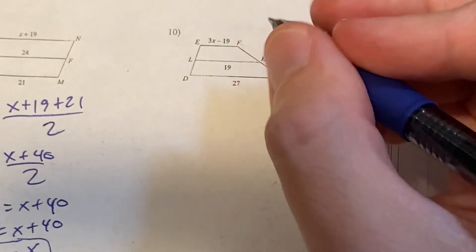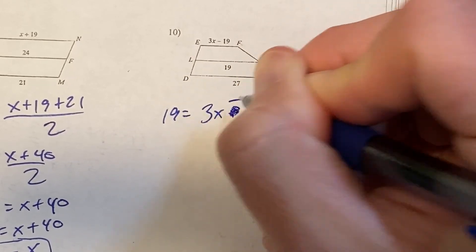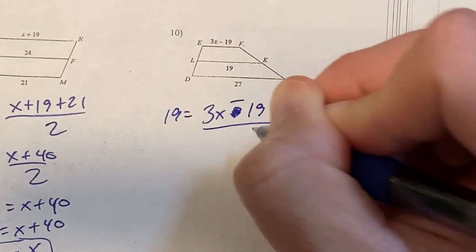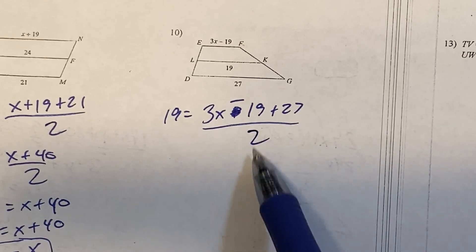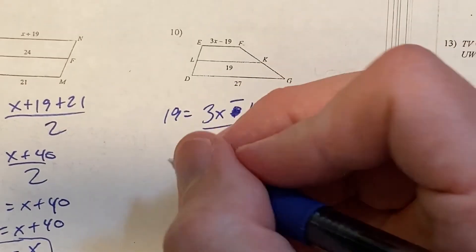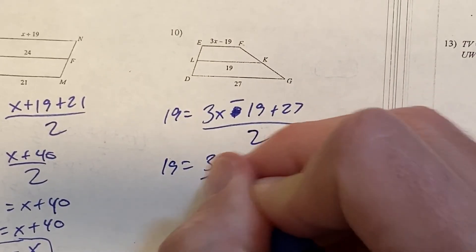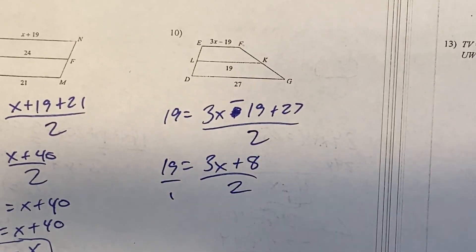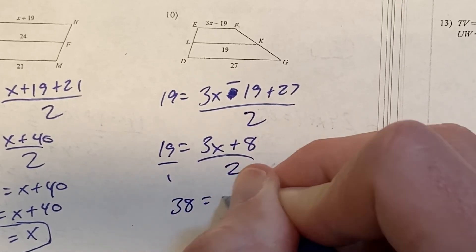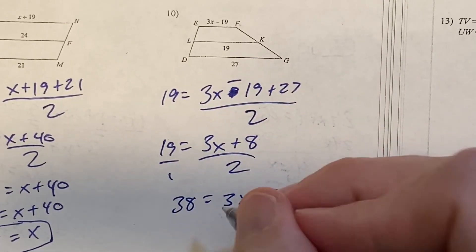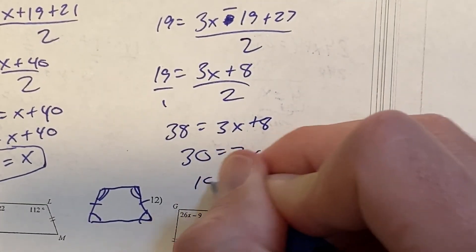Number 10 is a mid-segment problem. 19 equals (3x minus 19 plus 27) divided by 2. Simplifying: negative 19 plus 27 is plus 8, so 19 equals (3x plus 8) divided by 2. Cross-multiplying: 38 equals 3x plus 8, subtract 8 to get 30 equals 3x, divide by 3, x equals 10.